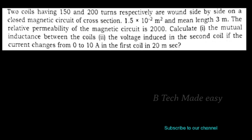Let's set up the data. For the first coil, number of turns N1 is equal to 150. N2 is equal to 200. Cross-sectional area A is equal to 1.5 × 10⁻² meters square. Mean length l is equal to 3 meters. Relative permeability μr is equal to 2000.